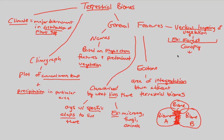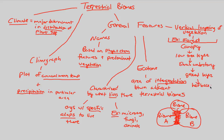Going lower, the next layer is called the low tree layer — still on the tree, but at a lower point. Continuing downward is the shrub understory, getting closer to the ground. Then we reach the ground layer, followed by herbaceous plants like ferns and similar shrubby plants. Finally, we reach the forest floor, which is also often called the litter layer because higher layers drop their vegetation down to it.